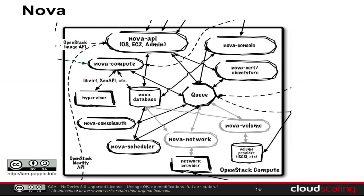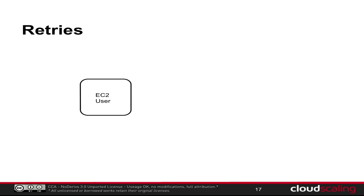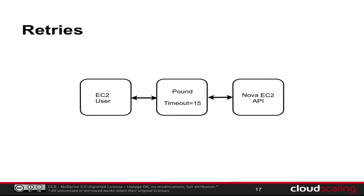So when launching 100 VMs, we get stuck in a slow scheduler waiting before the API can return. If you're using OpenStack as an EC2 user and there's a load balancer like Pound with a low timeout, the user tries to launch 100 VMs, the Nova API server is slow because the scheduler is slow, it doesn't respond, and after 15 seconds Pound sends a timeout back to the user. Then the EC2 client like Boto will automatically send a retry behind the scenes — the user isn't aware of it.